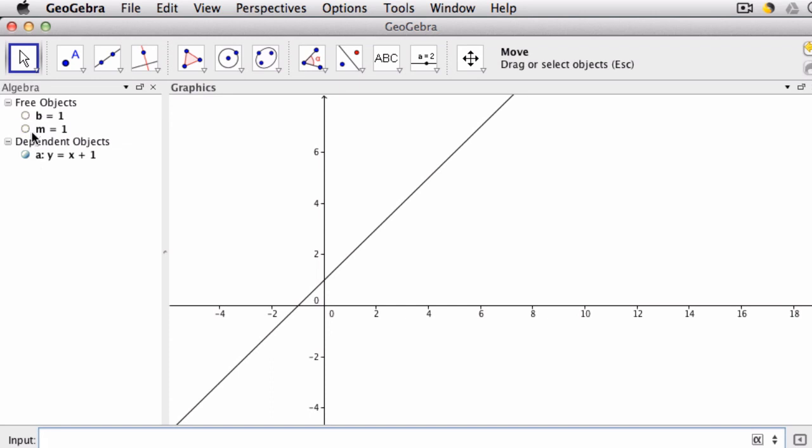That might help them understand what these two variables do to your equation. To do that, they can just click here and here to create two sliders that control the line. What's important is,